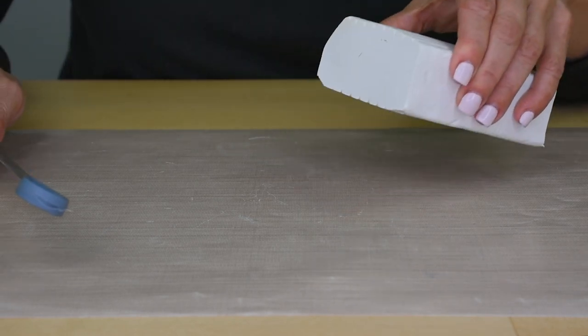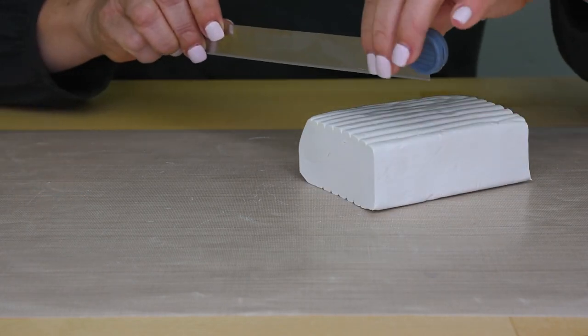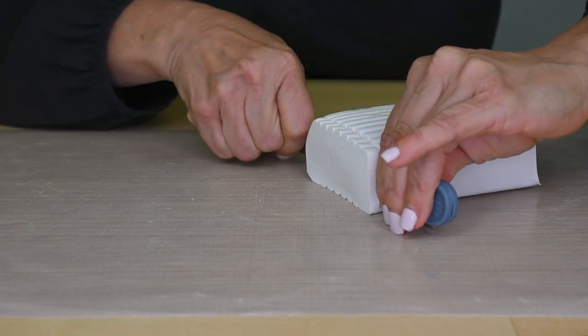So first what you want to do is get your block of Original Sculpey, and then you're going to take your blade and cut off a piece.